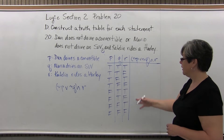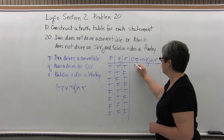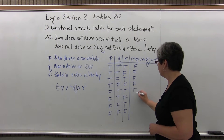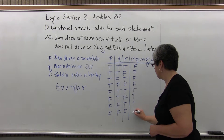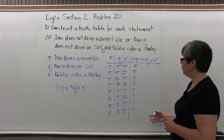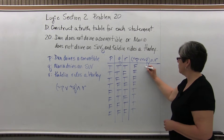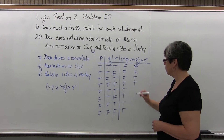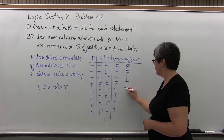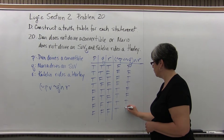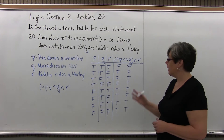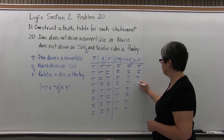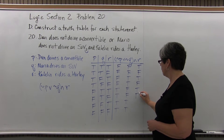Time for our simple statements. The negation of P will give us false, false, false, false, true, true, true, true. The negation of Q will give us false, false, true, true, false, false, true, true. And R simply is true, false, true, false, true, false, true, false.